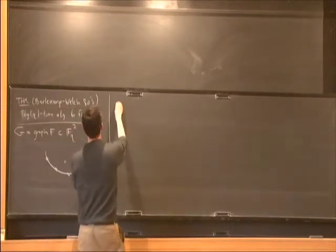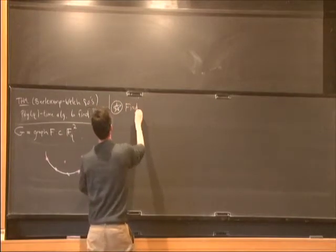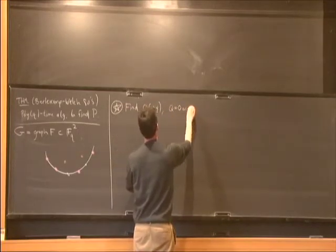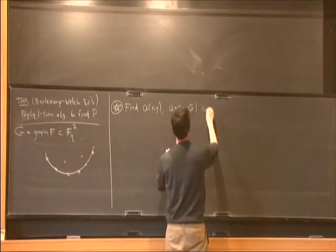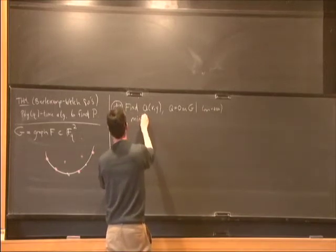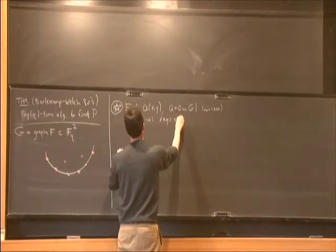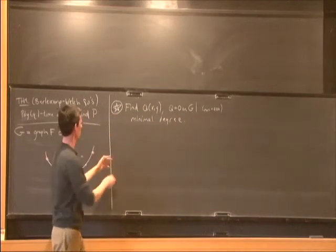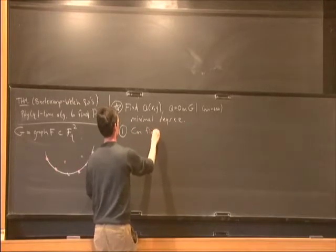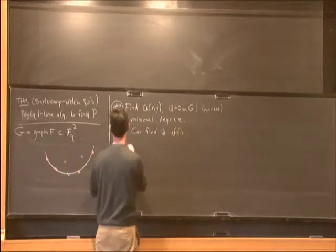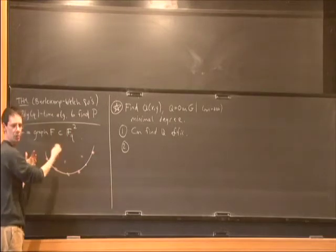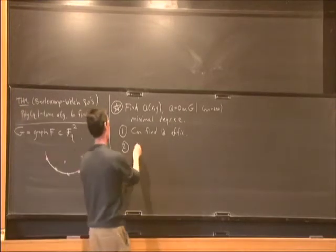The crucial idea of this algorithm is to find a polynomial in two variables Q such that Q vanishes on this graph — it's a non-zero polynomial of lowest possible degree. The outline of the algorithm is: one, we can find Q efficiently; and two, this polynomial will know about the algebraic structure. It will find the hidden algebraic structure in this set of points — Q finds p.